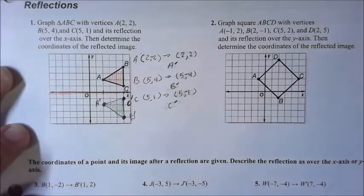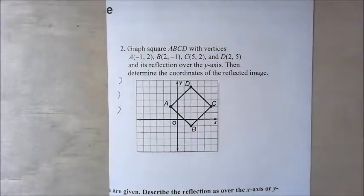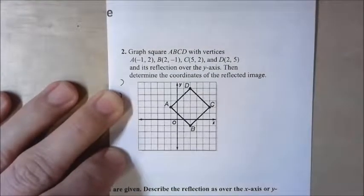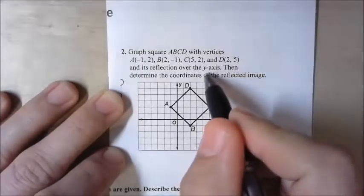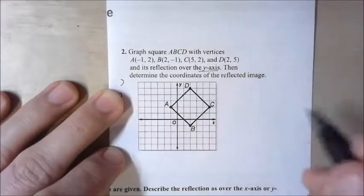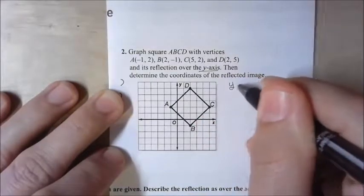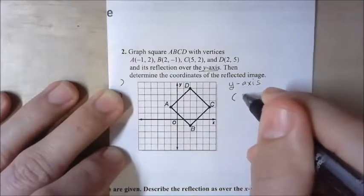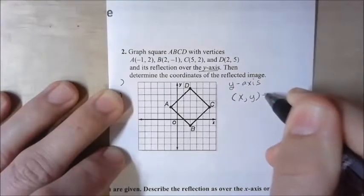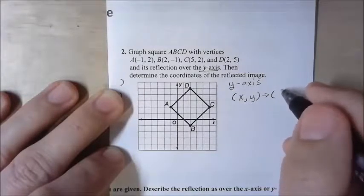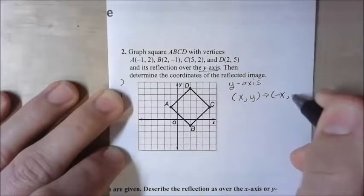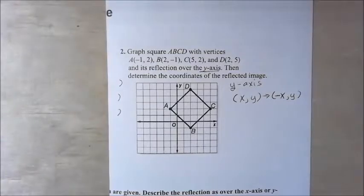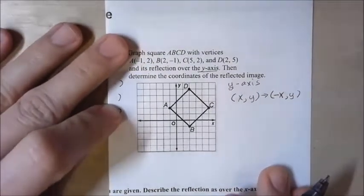Now let me show you how to do it using just the rule. On number two, we're going to do this by rule. It's telling us to reflect over the Y axis. Whenever we reflect over the Y axis, we have a rule — just like we had on our Cornell notes. Our rule is going to be X, Y maps to negative X, Y. And we're going to use this rule for each one of these ordered pairs to transform them into what we need to reflect the shape.